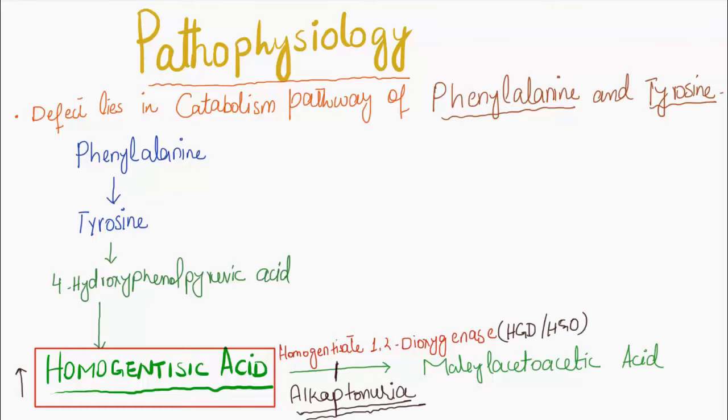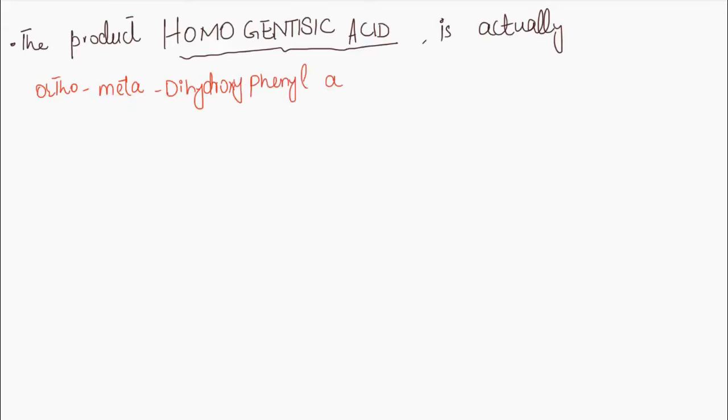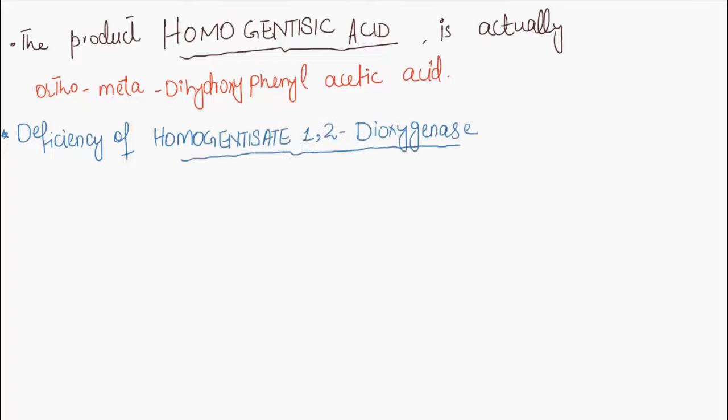The product homogentisic acid is actually ortho-meta dihydroxy phenylacetic acid. Deficiency of the hepatic enzyme homogentisate 1,2-dioxygenase, or HGD, causes accumulation of homogentisic acid.